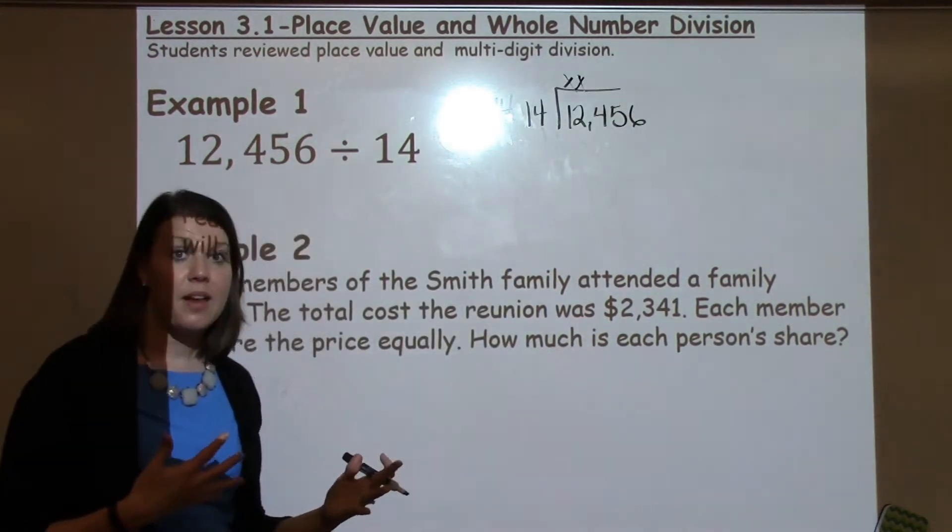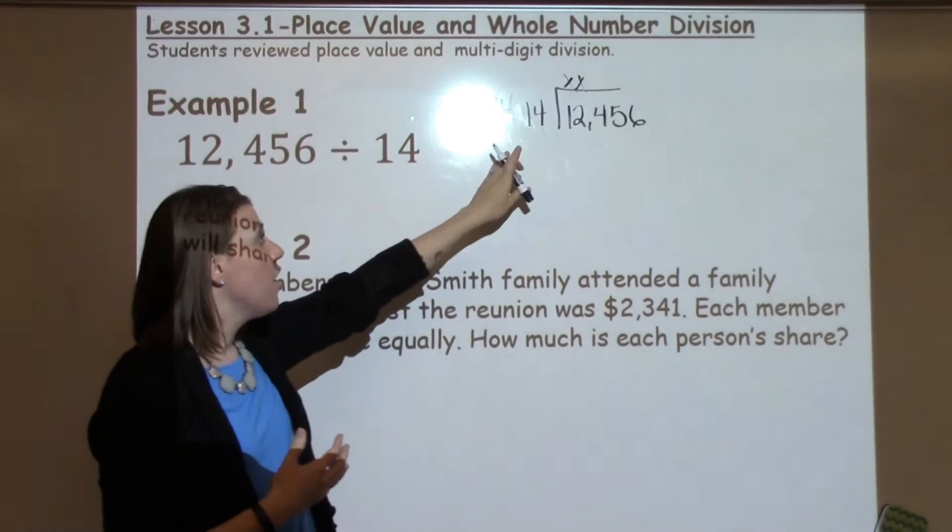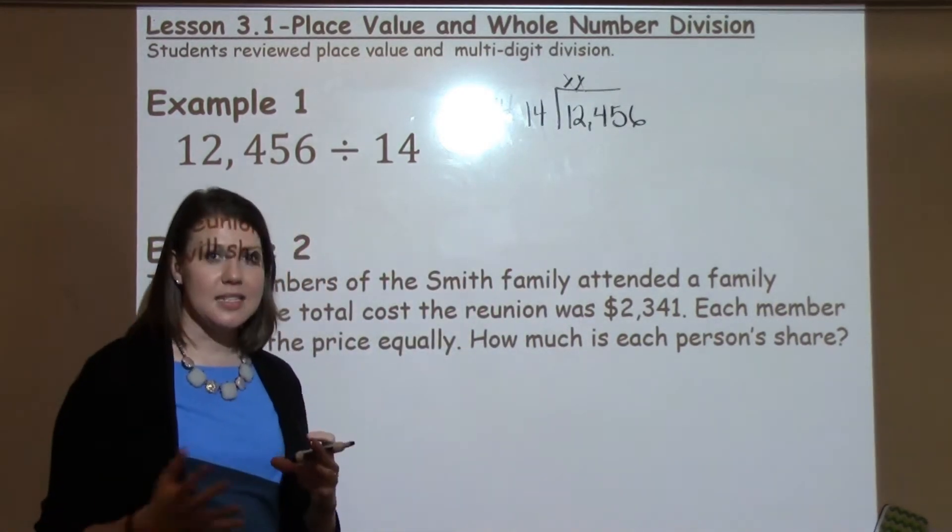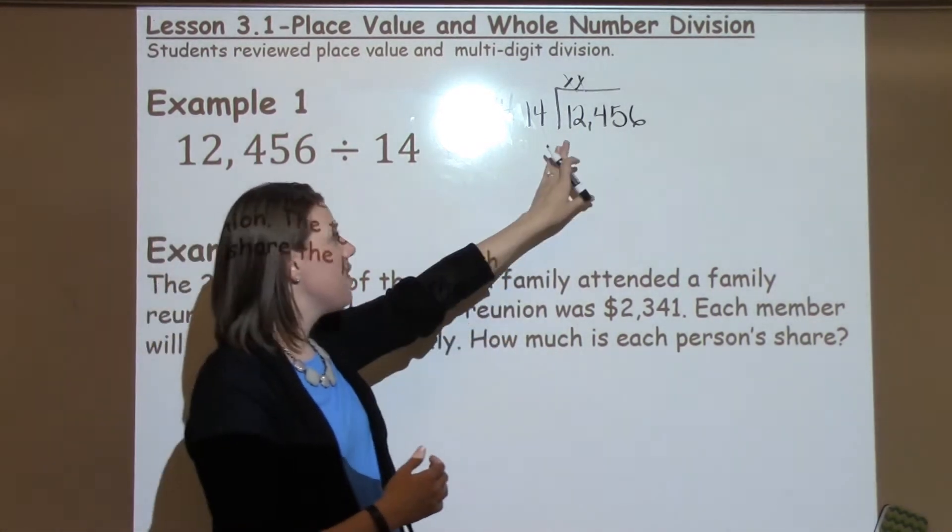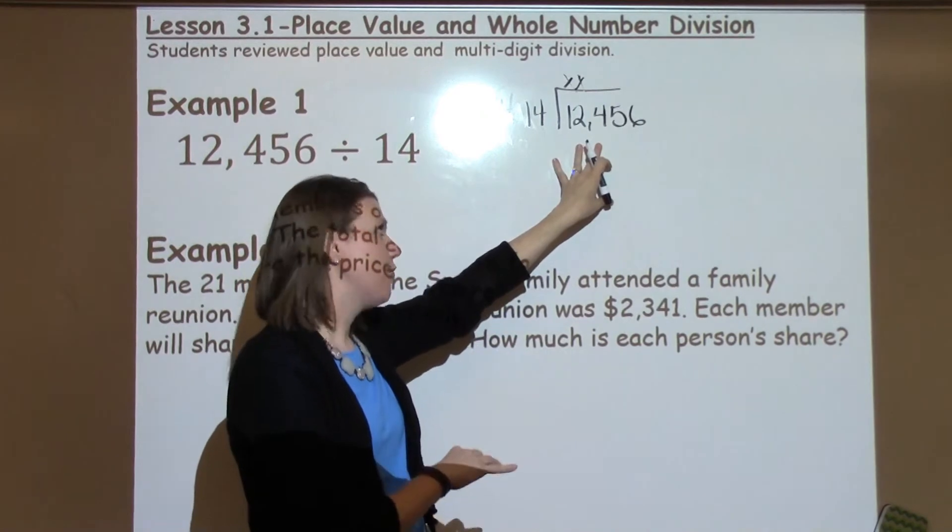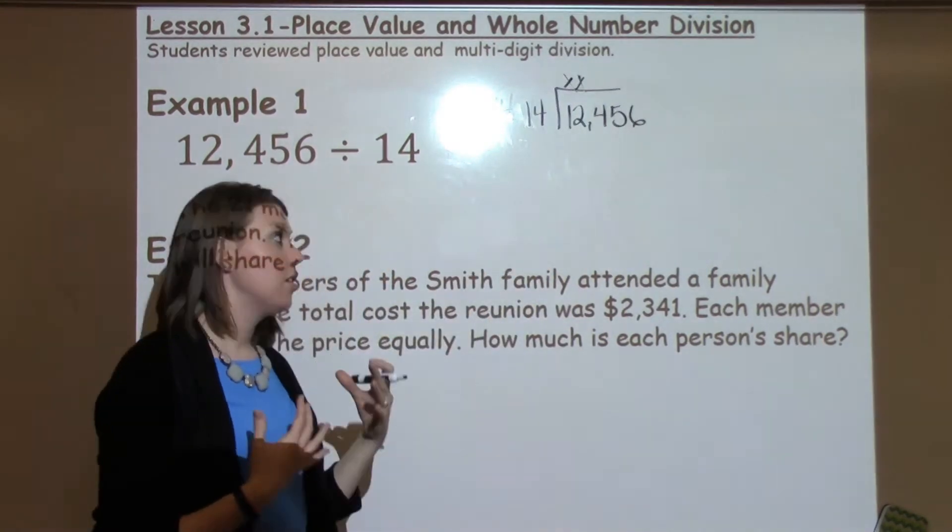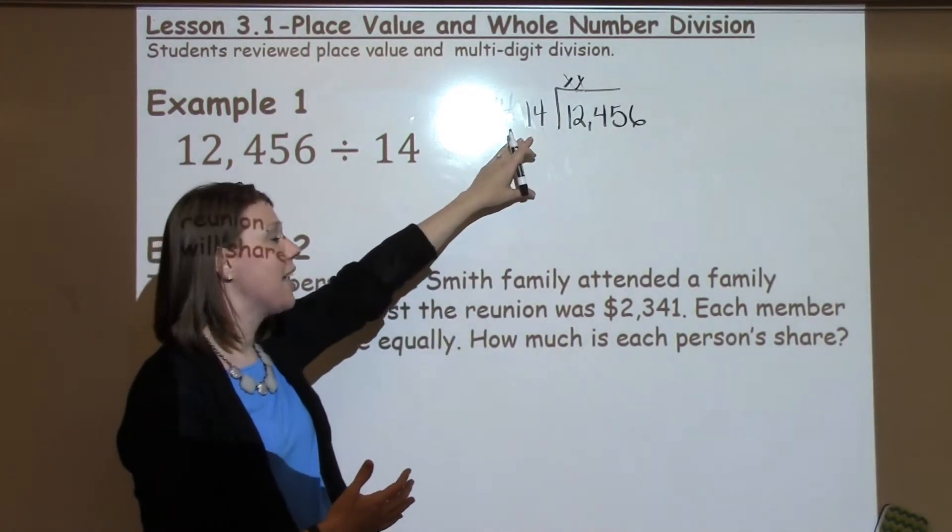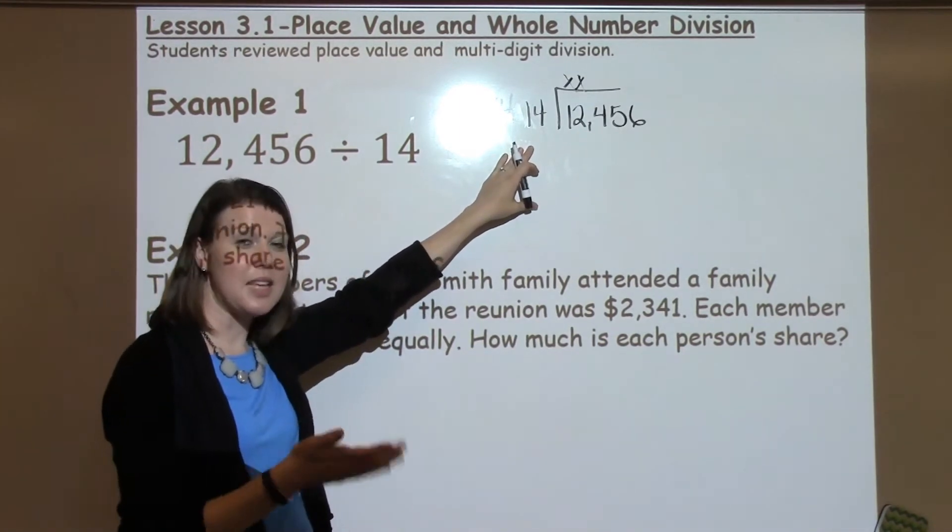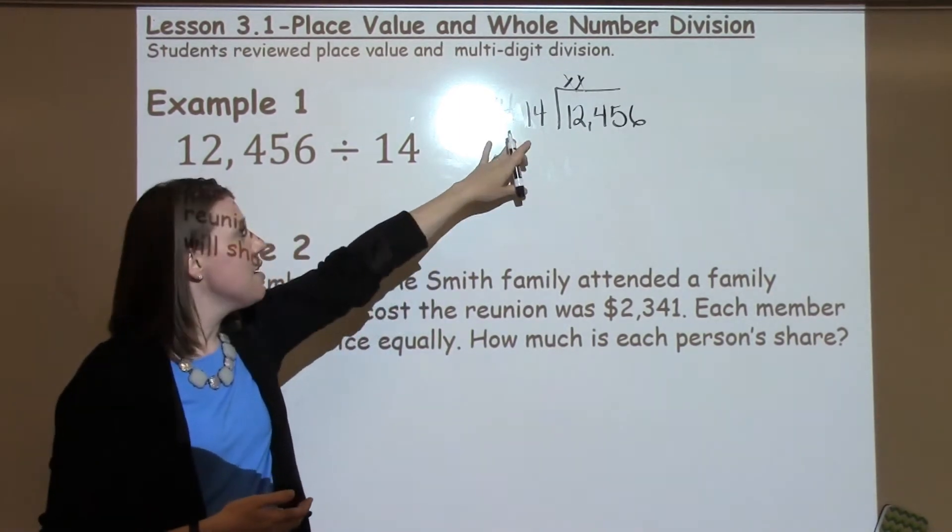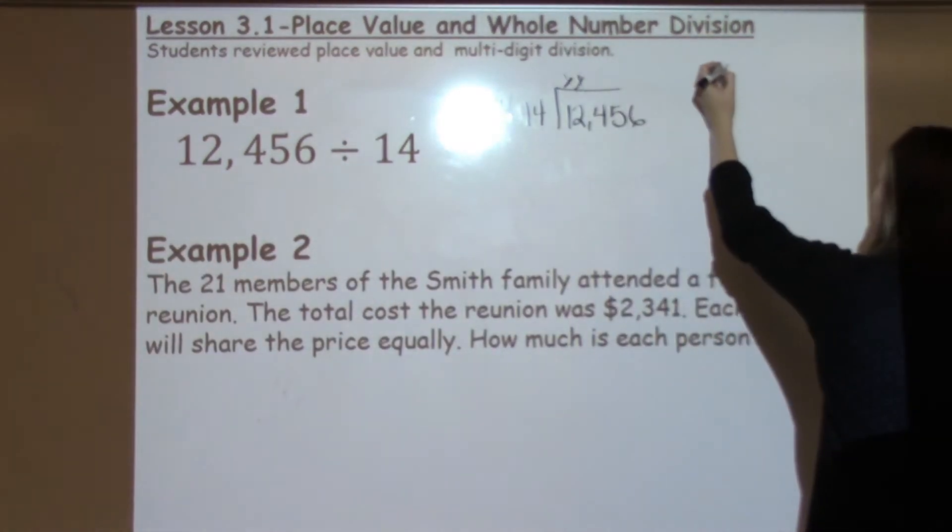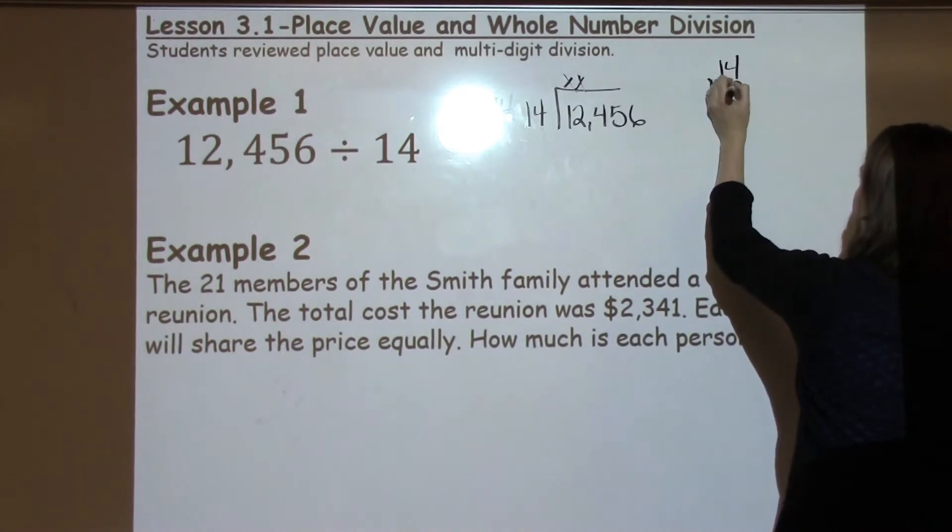One of the things I like to think about is a guess and check spot. I know 14 times 1 is 14. I know 14 times 10 is an extended fact, it's 140. I kind of want to think, 124, is that closer to 140 or closer to 14? I know it's closer to 140, so I'm going to pick a number that's larger. I'm not going to pick 2 or 3. I'm going to jump up to probably the 7s, the 8s, the 9s. So I'm going to take 14 times 8.